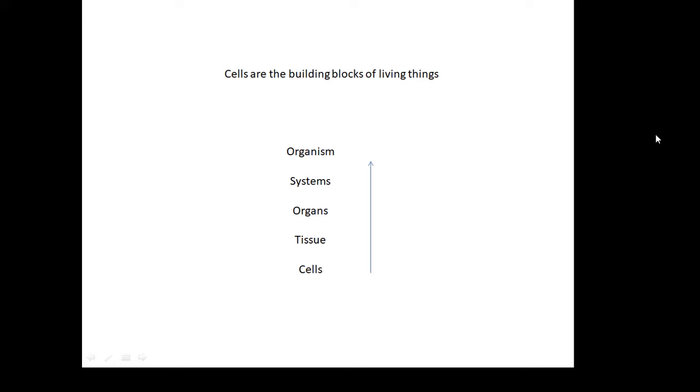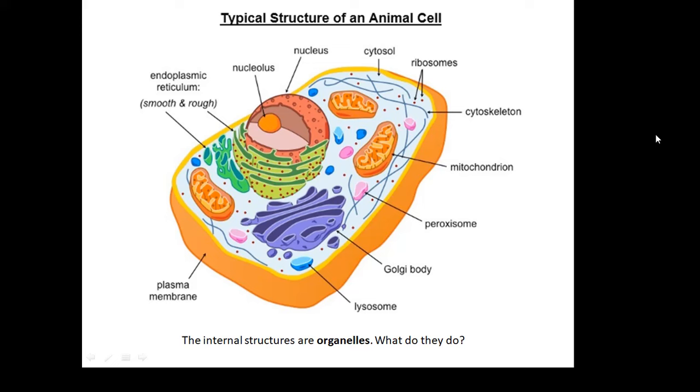This looks a bit frightening at first. We're going to go through all the different pieces. What do they do? What are they called? This is a typical structure of an animal cell. Inside the cell, we see these things called organelles. These organelles do different jobs. So what are they called, and what do they do?